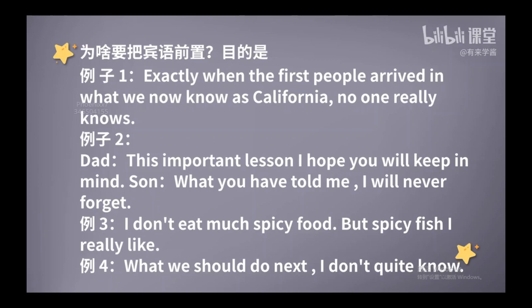那么大家有没有发现，其实中文当中也有这种宾语前置的现象。比如说：辣子鱼我特别喜欢，按中文的正常语序应该说我特别喜欢辣子鱼。我们下一步该怎么做我也不知道，按照正常的汉语语序应该说我也不大知道下一步该怎么做。不仅仅是现代汉语，在古汉语当中也有很多宾语前置的现象，比如唯命是听（命是听的宾语），唯力是图（力是图的宾语），命和力这两个宾语都被放在了谓语的前面。所以把宾语前置来表示强调，无论在中文当中还是英文里都是存在的，在这点上中英文是相通的。